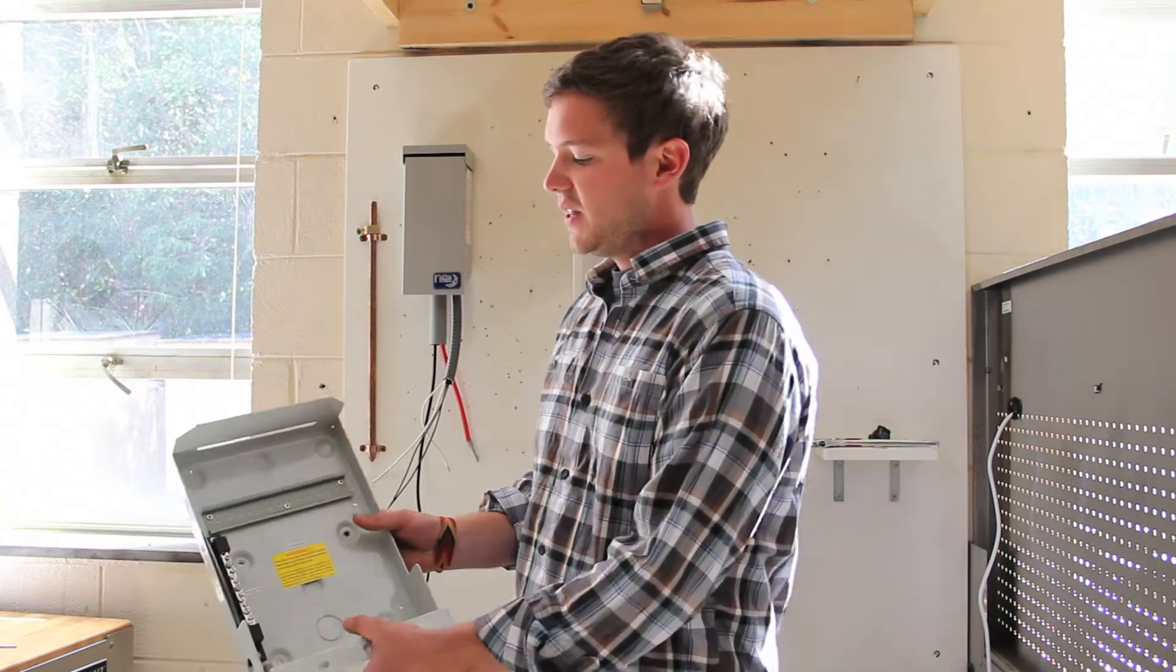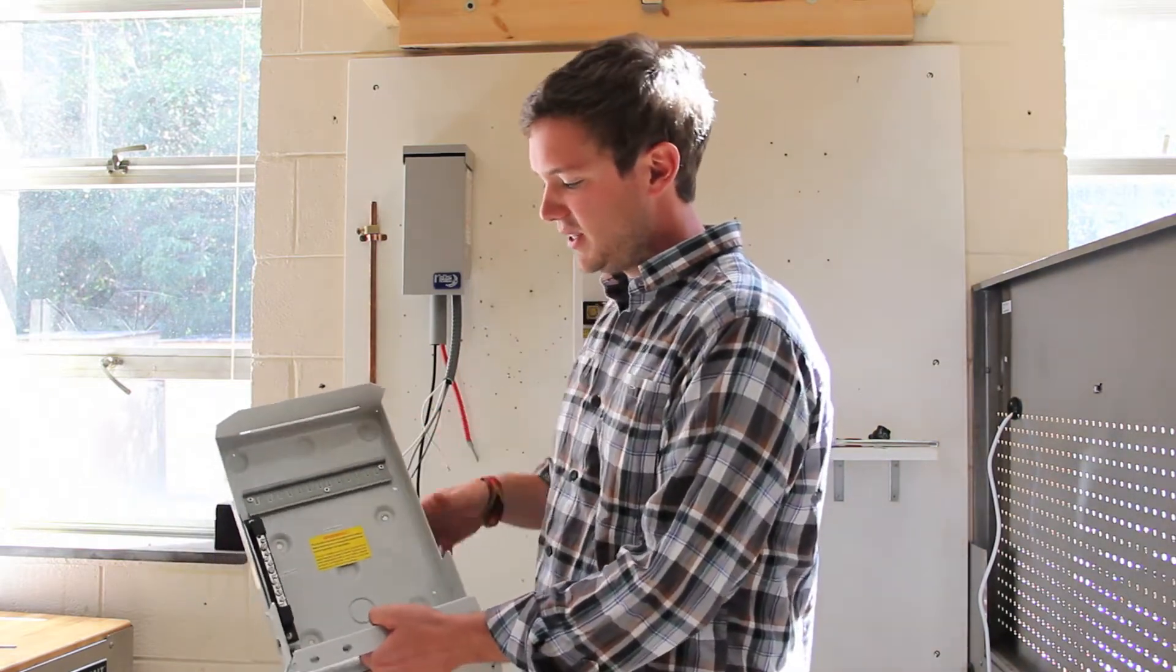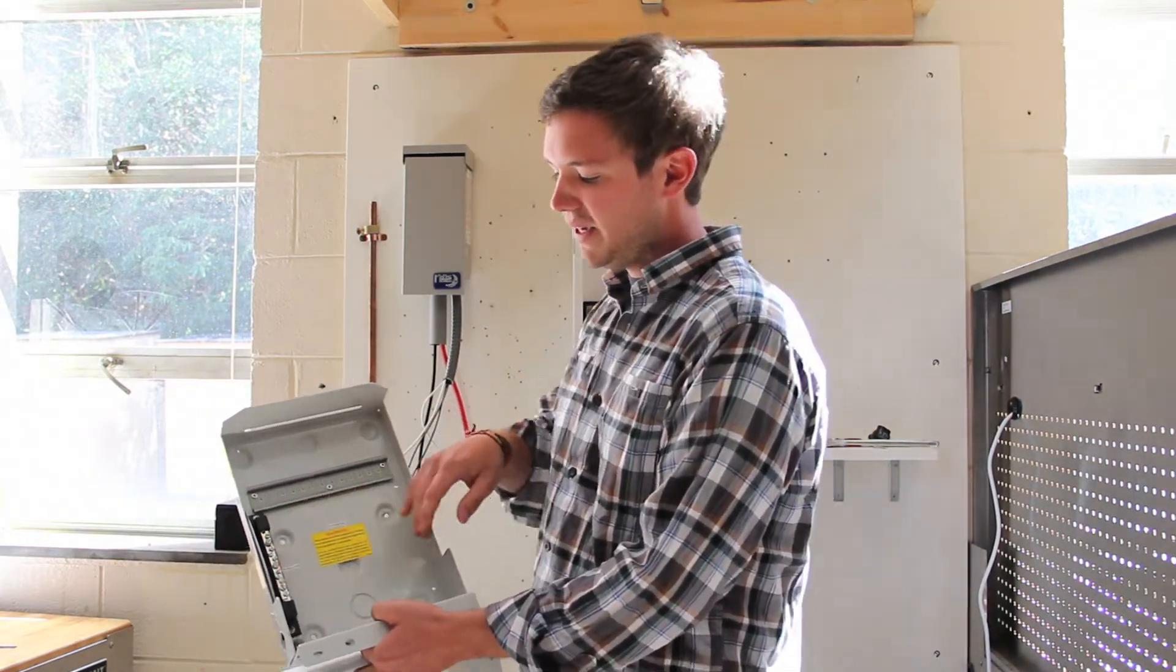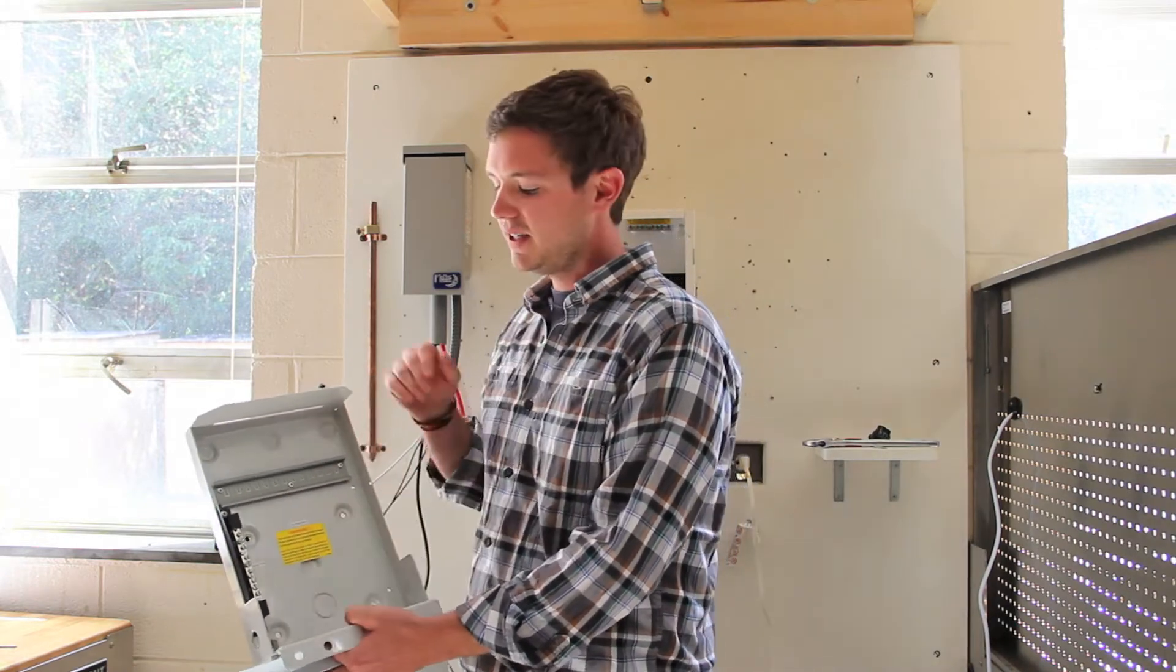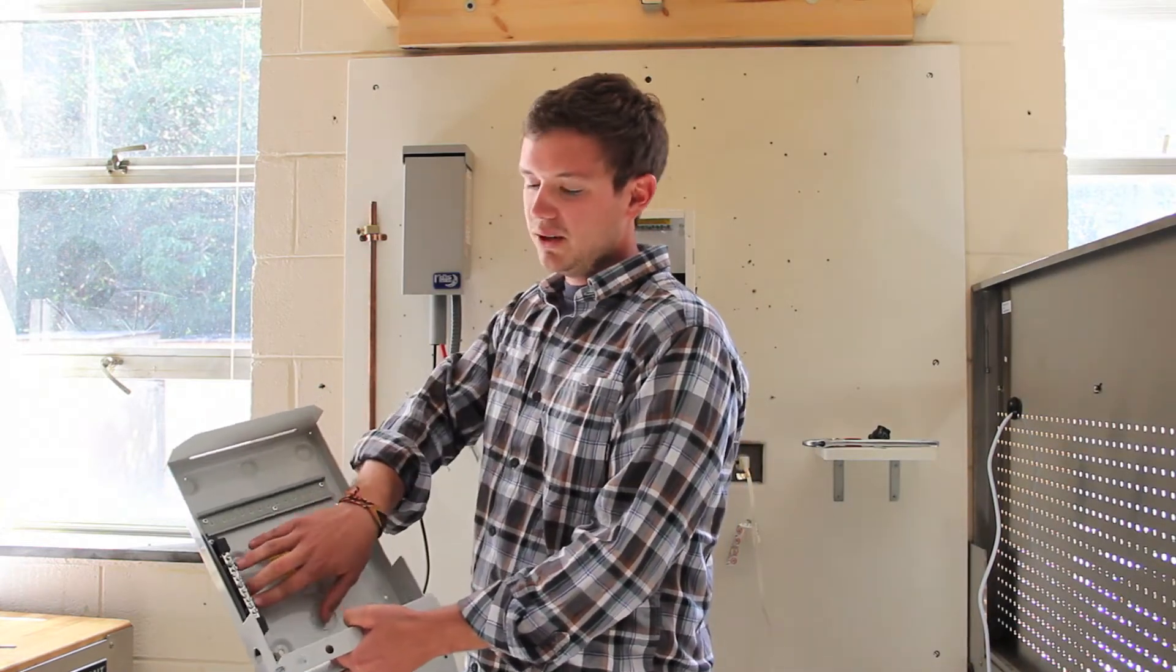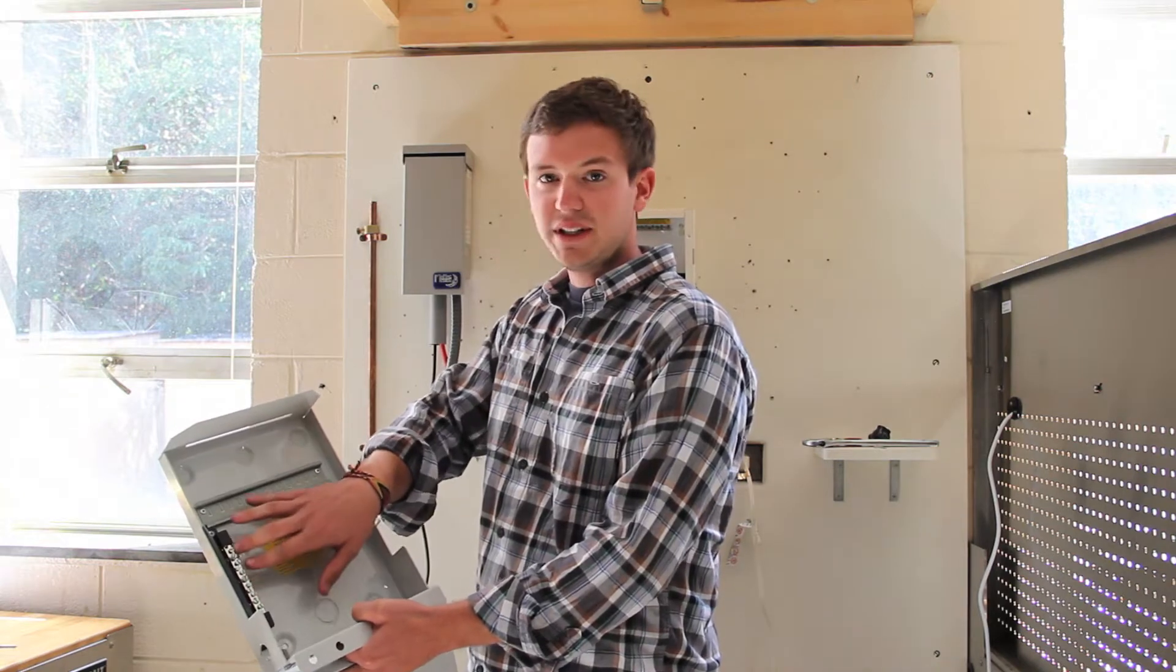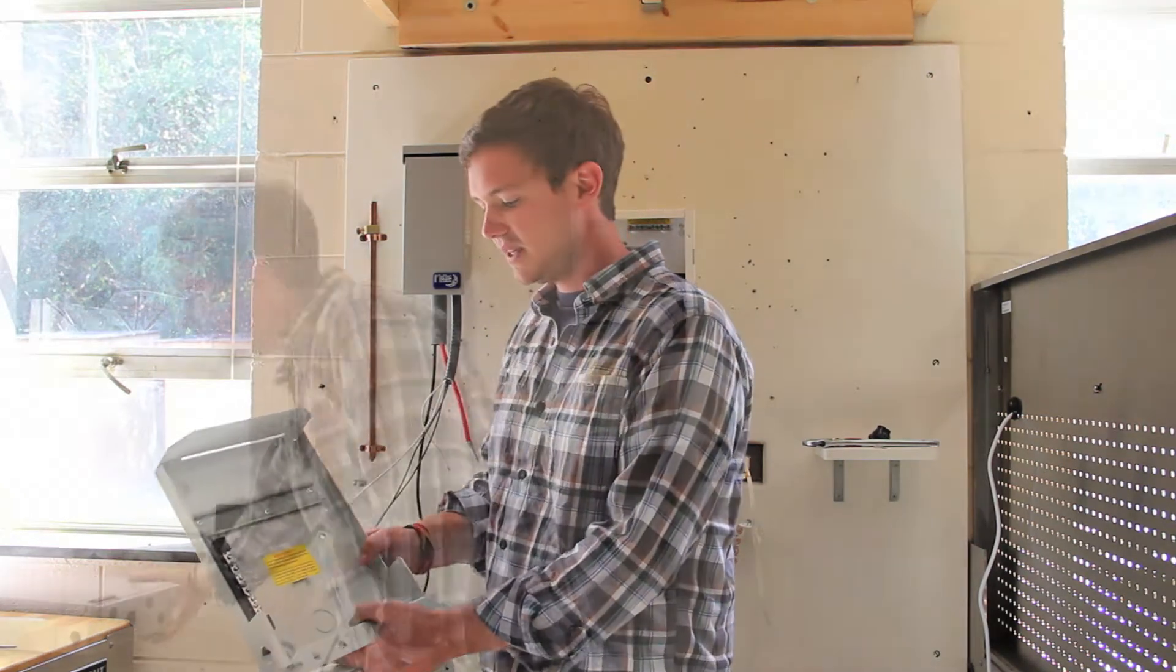In a grid tie application, you'll experience voltages up to 600 volts DC. Those mount on a DIN rail such as this. We have our PV negative bus bar and our ground lug to be able to parallel all of our strings together on the negative side.